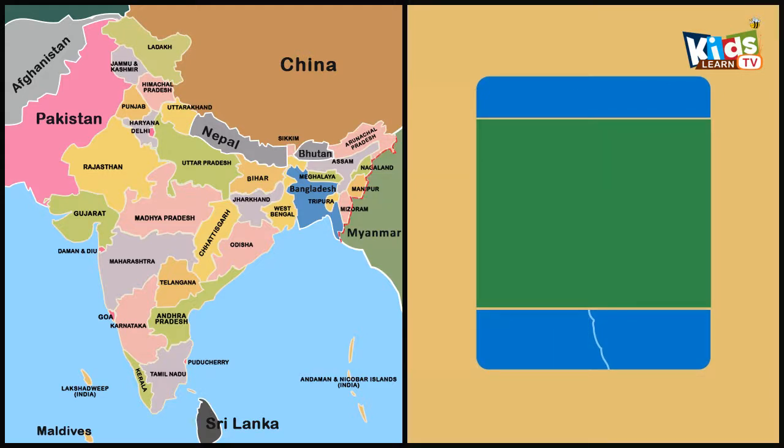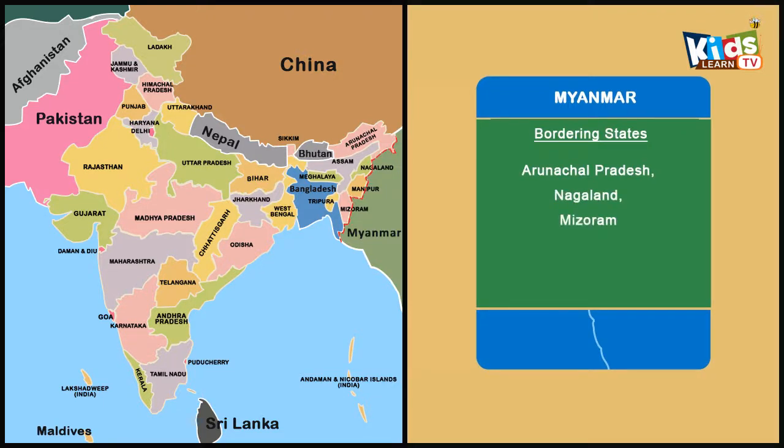The Indian states Arunachal Pradesh, Nagaland, Mizoram and Manipur share the border with Myanmar. The border length is 1643 km.